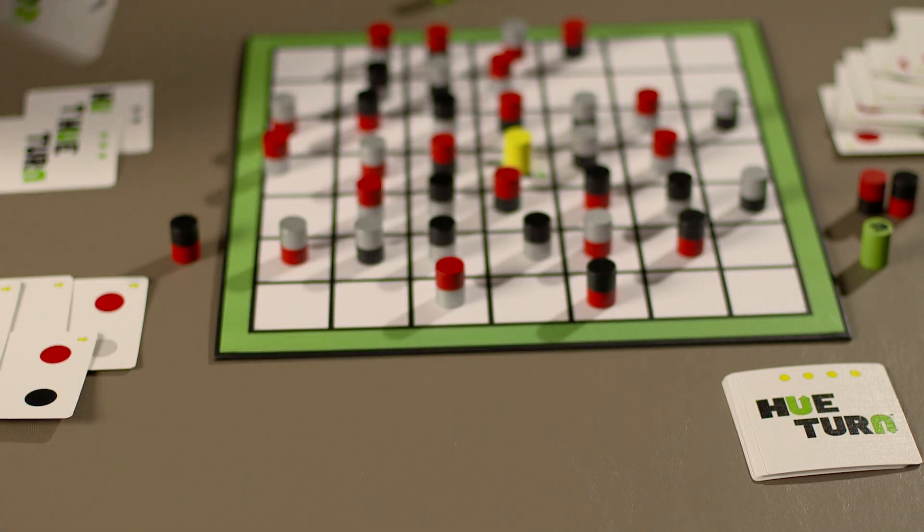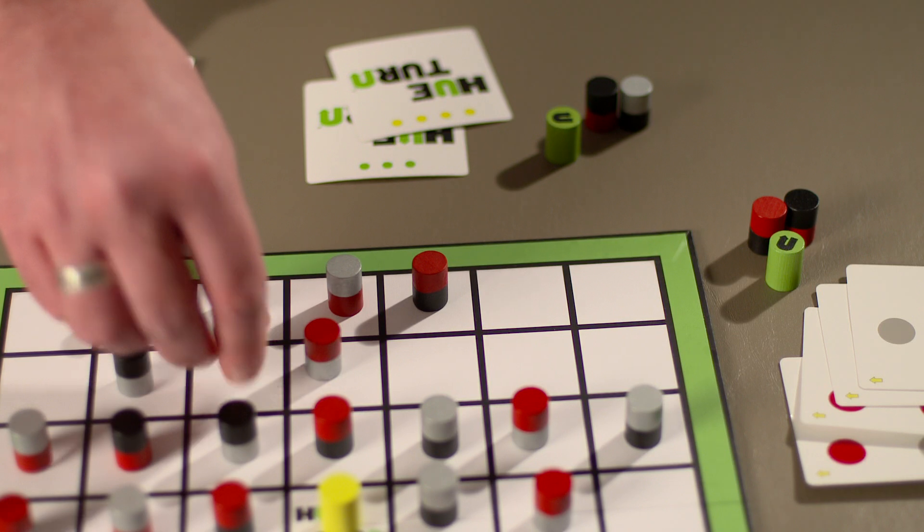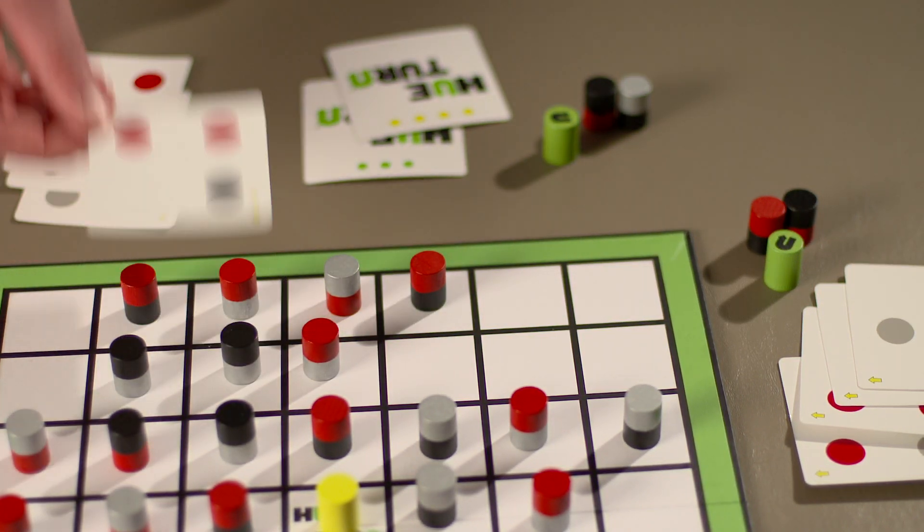The game will end after two of the three piles are exhausted. When the final card is drawn from the second pile, let the remaining players each get a final turn, then add up points.